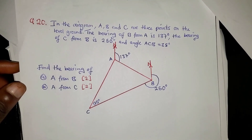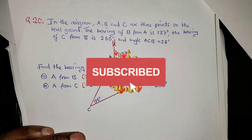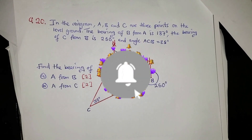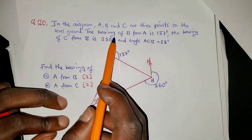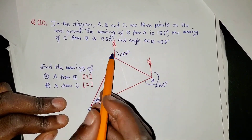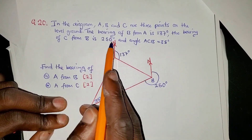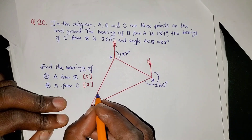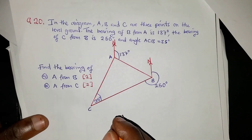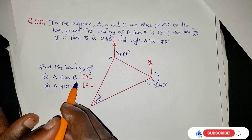We have question 20 of the 2024 GCE Paper 1. In the diagram, A, B, and C are three points on level ground. The bearing of B from A is 137°, the bearing of C from B is 250°, and the angle ACB is 35°. We are asked to find the bearing of A from B.